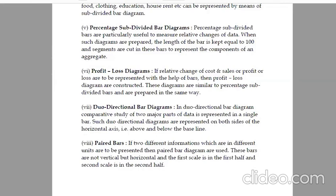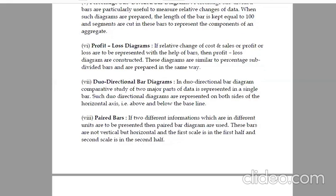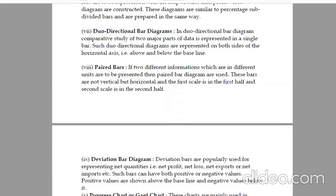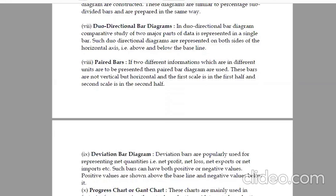Profit loss diagrams. If relative changes of cost and sales or profit or loss are to be represented with the help of bars, then profit loss diagrams are constructed. These diagrams are similar to percentage subdivided bars. Duodirectional bar diagrams. In duodirectional bar diagrams, comparative study of two major parts of data is represented in a single bar. Such diagrams are represented on both sides of horizontal axis, above and below the base.